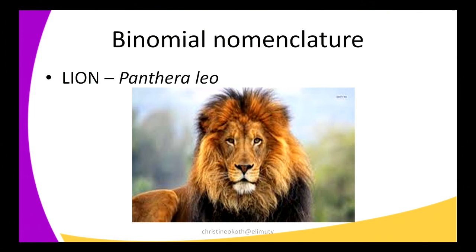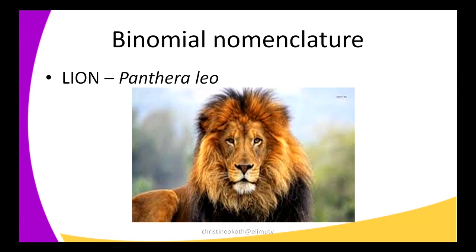Starting with the lion, scientifically known as Panthera leo. They do not have patterns to distinguish them, but the males have a mane — the fur around their faces. Most of them are scavengers and they are the only big cats to hunt together. Lions live for about 14 years, but in captivity they can live more years than that.